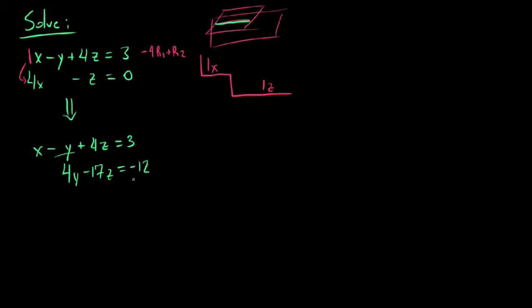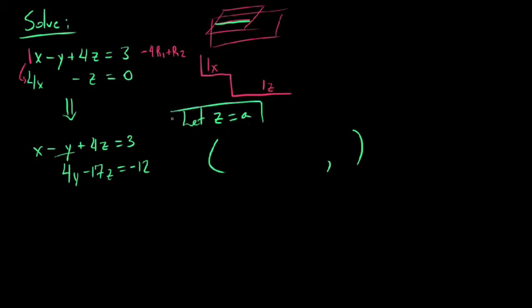So now we have this system. It puts things into row echelon form. As we do with any system that is consistent dependent, we have to develop what we call a parameter — it has infinitely many solutions. What we're going to do is pick a variable and allow it to equal some parameter. We're going to let z equal a. We could have let y equal a or x equal a, but we're going to let z equal a.